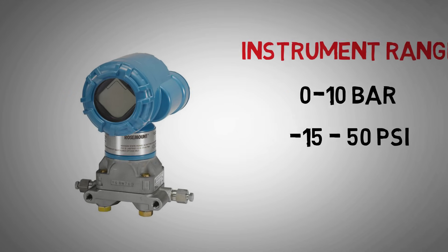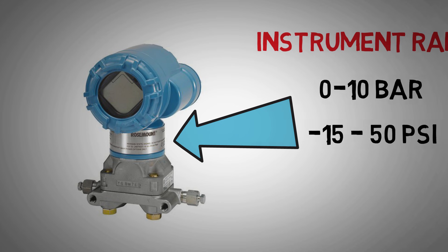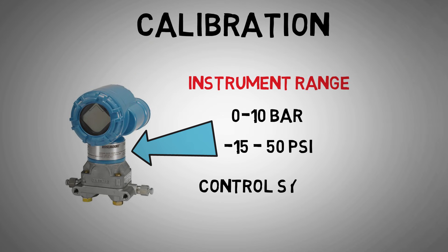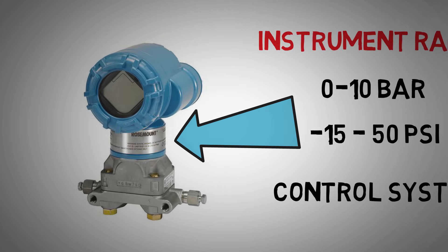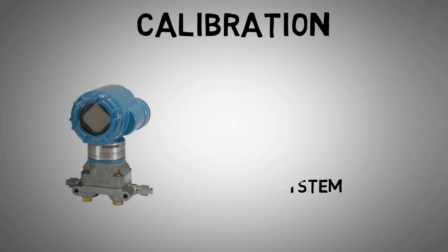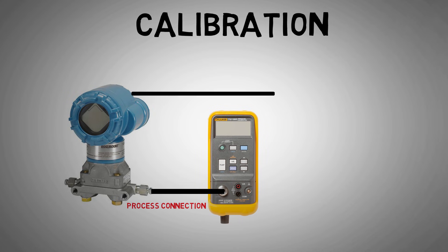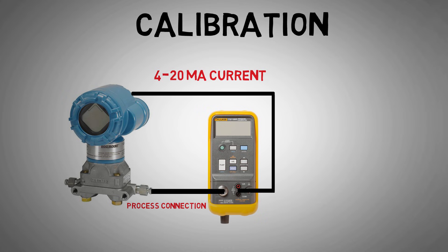We would first need to know the range of the instrument so that we know what test equipment to select and to calculate our test points. The range might be printed on data labels on the instrument, or we could look at the control system block we are connected to in order to find the range. We would then connect a calibrated, suitably ranged pressure pump or calibrator to our instrument via its process connection. We would also connect the transmitter electrically to a calibrator to test the 4-20mA current signal that the transmitter gives out to different inputs.